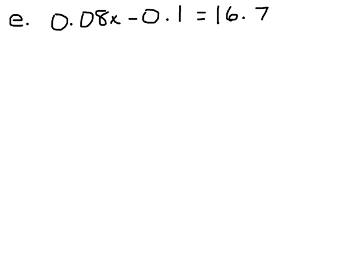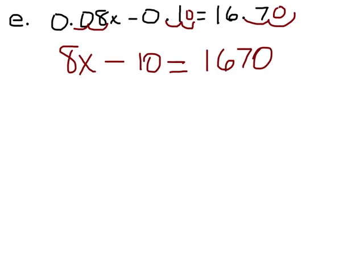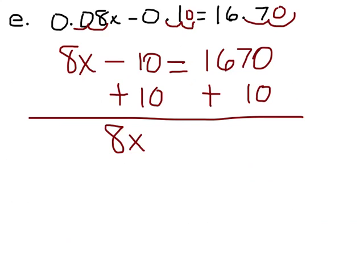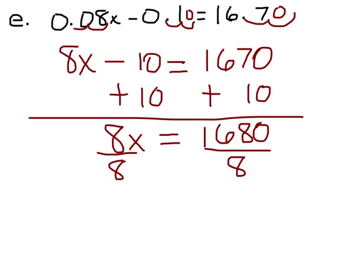And here we're going to deal with our decimals. This one has 2, so we're going to have to move everything 2. And now we're going to have 8x minus 10 equals 1,670. And we're going to put plus 10. And we're going to have 8x equals 1,680. If we divide that by 8, we have 210.